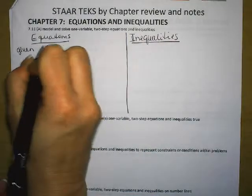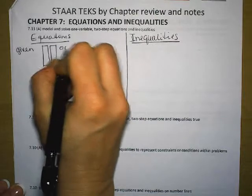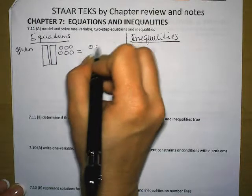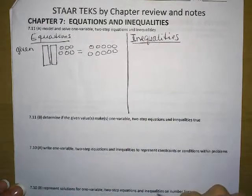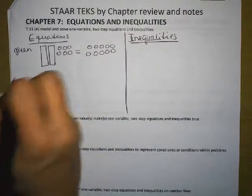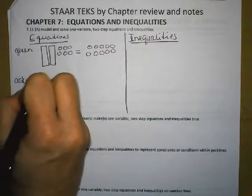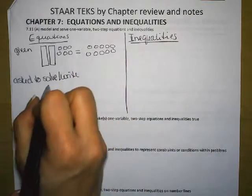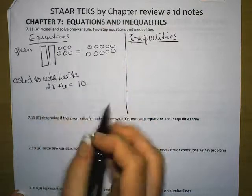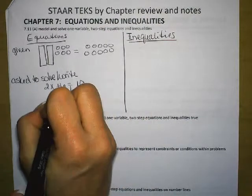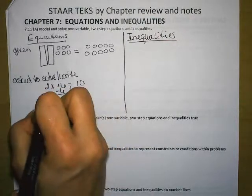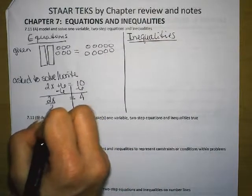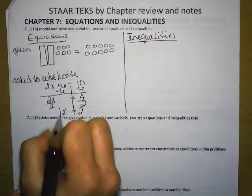So you may be given the model and you will be asked to write and solve the equations. So this one is 2x plus 6 equals 10. You get to do inverse operations. Subtract 6 from both sides. 2x equals 4. The opposite of multiplying by 2 is dividing by 2. And you get x equals 2.